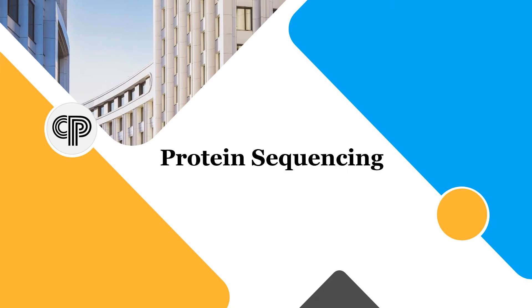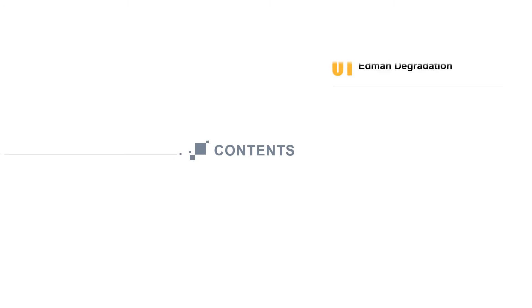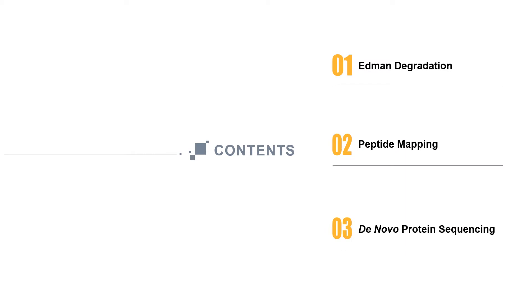Hello everyone, welcome back to the Creative Proteomics channel. Today's topic is protein sequencing. In this video, we'll introduce three techniques for protein sequencing: Edman degradation, peptide mapping, and protein de novo sequencing. Below we'll introduce the principles, processes, and applications of these three protein sequencing technologies.